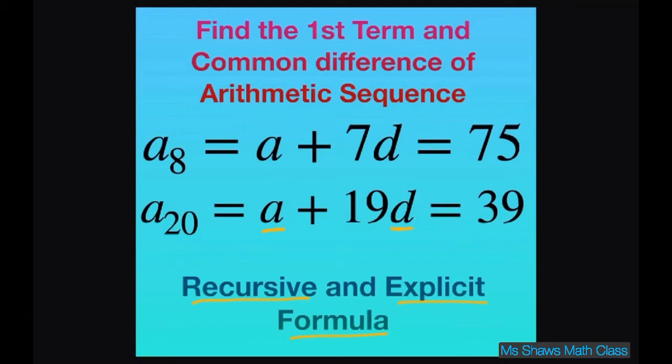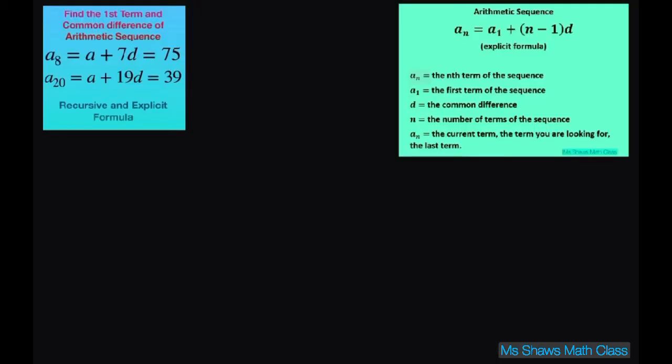So basically for this problem, and I already set it up for you, but it's saying the 8th term is 75 and the 20th term is 39. So I'm using this formula here. If they're saying the 8th term is 75 and the 20th term is 39.